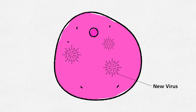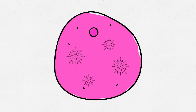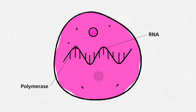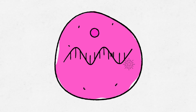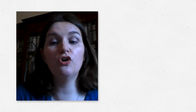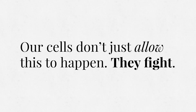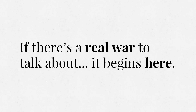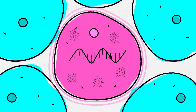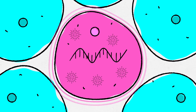It involves the interaction between the RNA and a thing called the polymerase. That polymerase is able to bind onto the viral RNA and effectively act like a photocopier — it will read the RNA and make copies of it. All of these different copies are then packaged into new virus particles, which can then spread to other cells and to other people as well. But our cells don't just allow this to happen — they fight. And if there's a real war to talk about, it begins here.